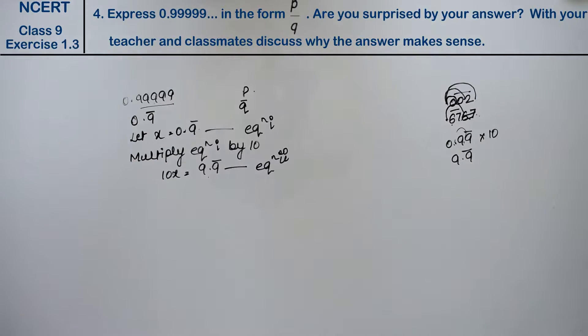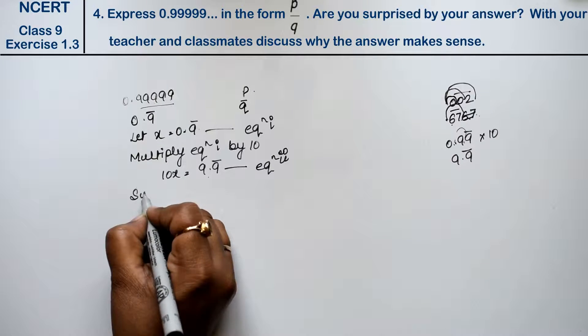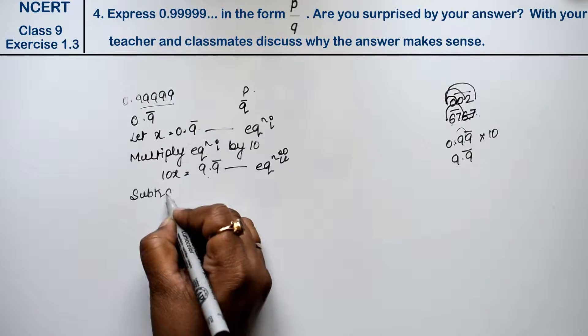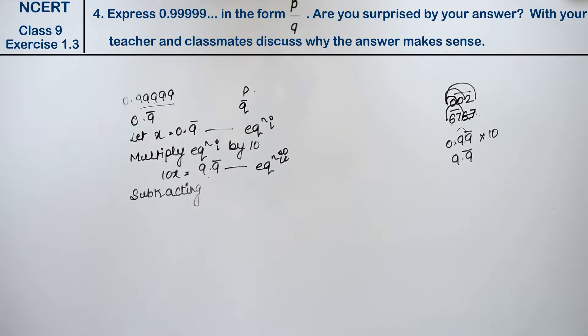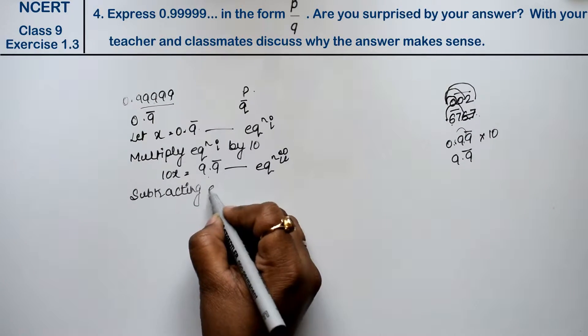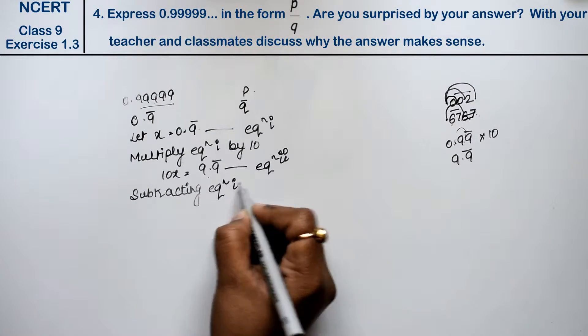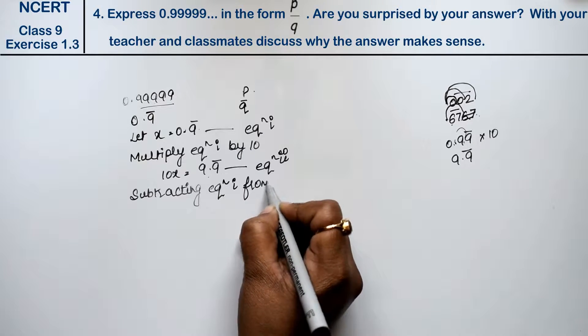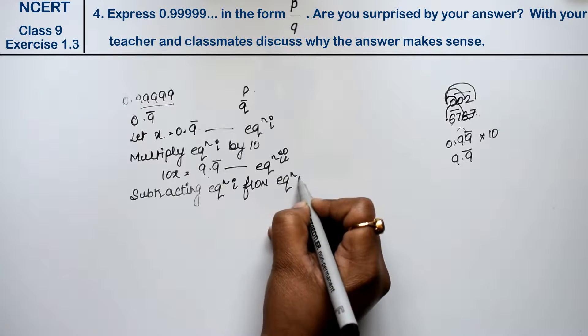So what was the second equation? 10x equals 9.9 bar. So the first equation is minus, right friends?